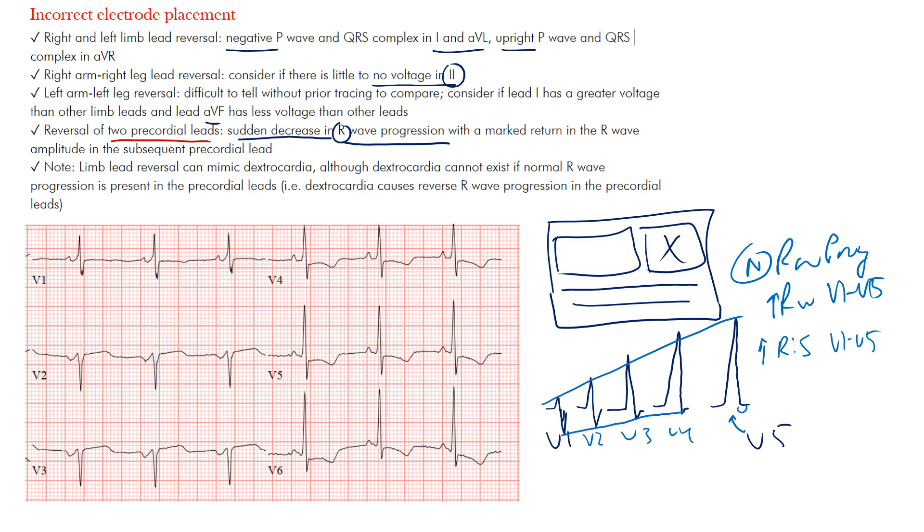Now the other thing I want you to note here is that limb lead reversal can mimic dextrocardia. Dextrocardia means that the heart is on the right side of the body. So normally if you have the patient's torso, maybe the heart's this way. Now if you have dextrocardia, it's usually going the opposite direction or something like that. Obviously one of the worst drawings of a person, but I certainly don't have any artistic ability as you're seeing here. So dextrocardia, it's on the right side of the heart. And the reversal can mimic it.